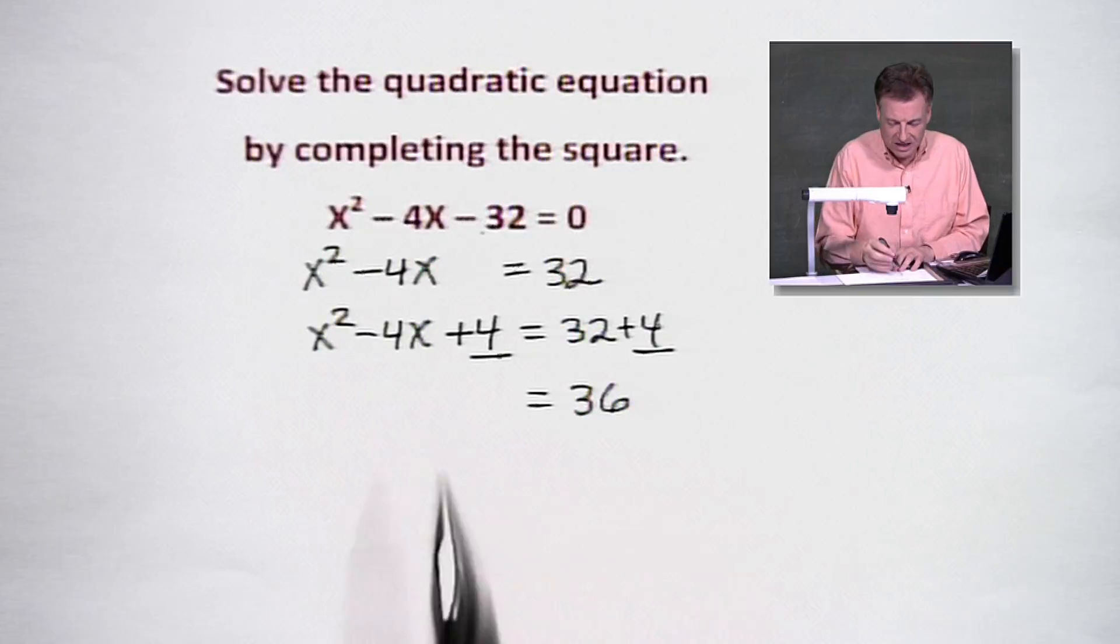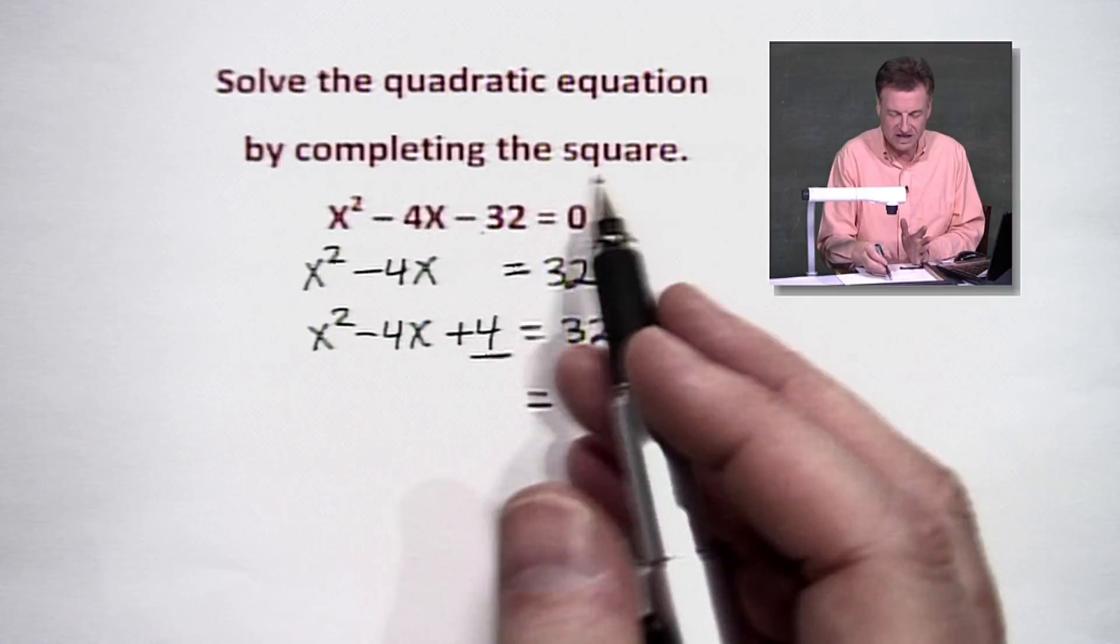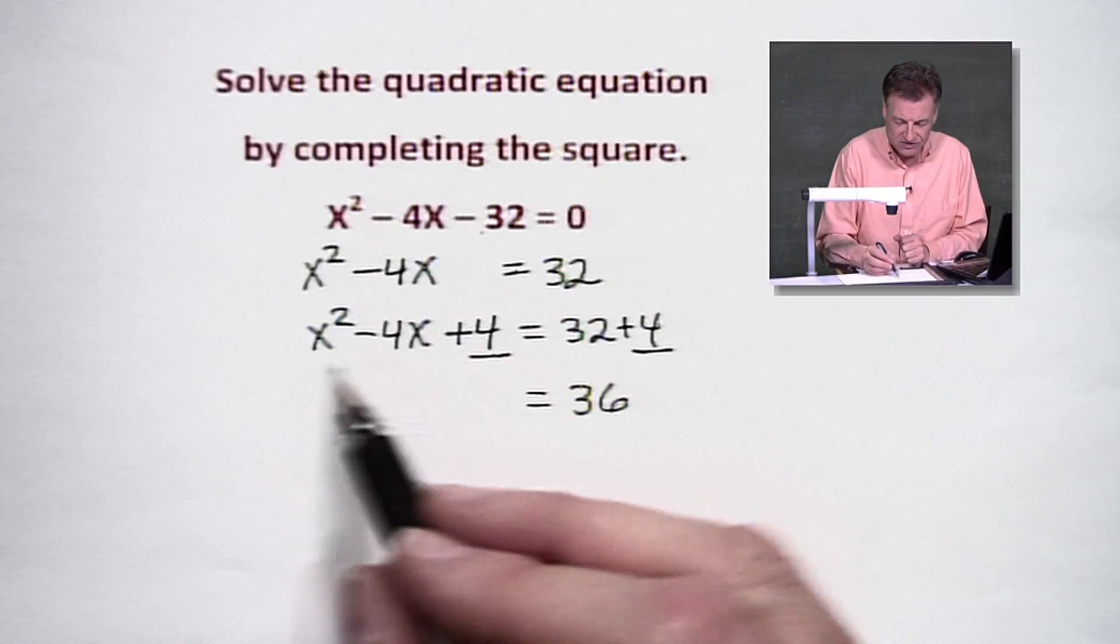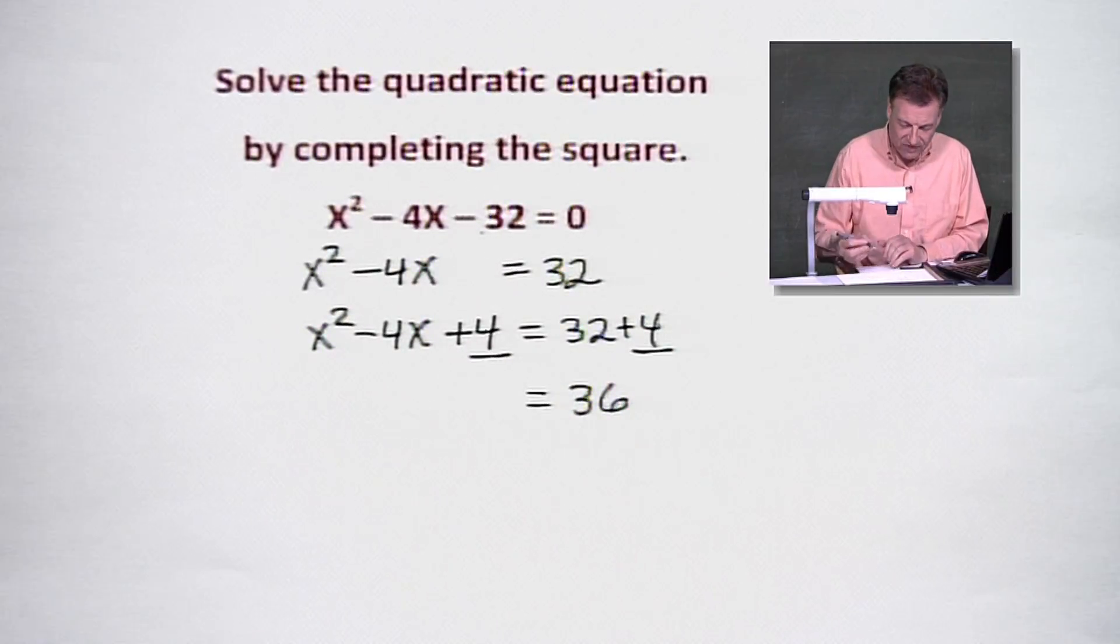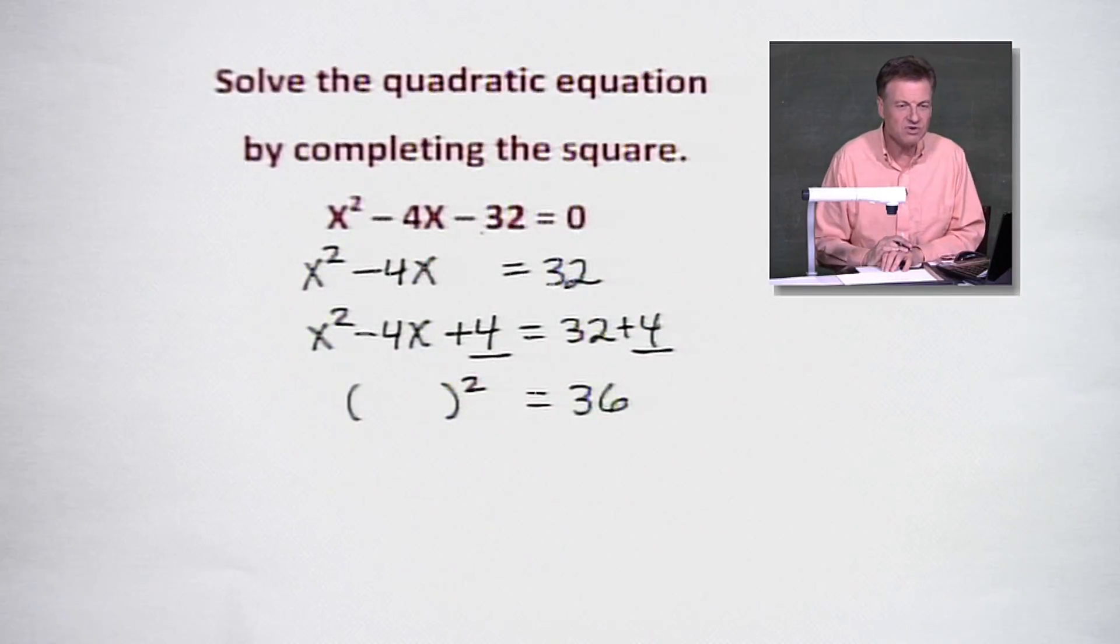Now, over here, we've got to go ahead and break this trinomial square. And that's another reason how we've said we've completed the square. This is a trinomial square. And what that means is there is a binomial times itself that will give you this result.